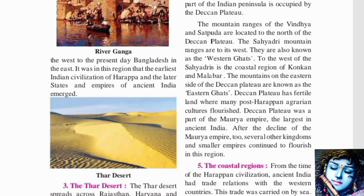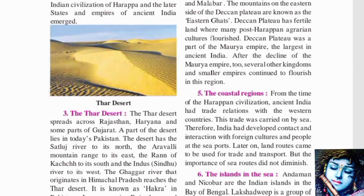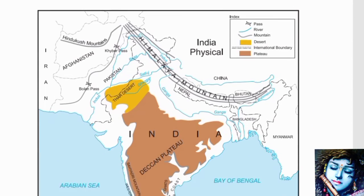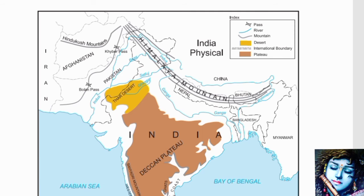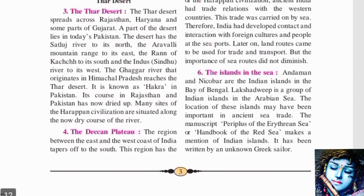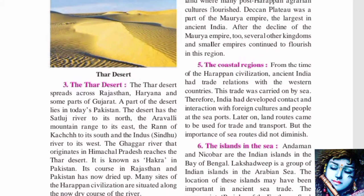Next, we see the Thar Desert. The Thar Desert spreads across Rajasthan, Haryana, and Gujarat. A part of the desert also lies in today's Pakistan. This desert is more in India and partially in Pakistan.